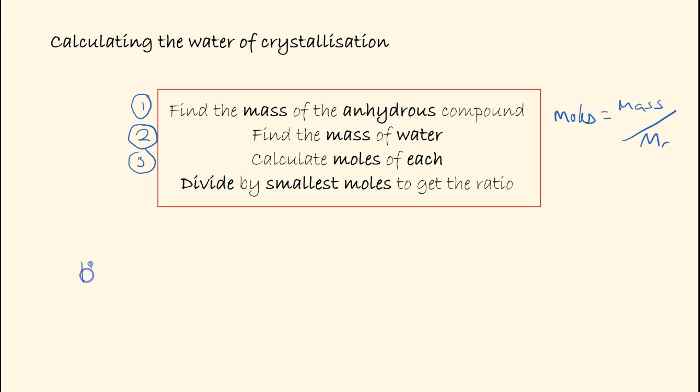For water, that's always 18, and the other ionic substance depends on what it is. We find the moles of the water and the moles of the ionic substance, then divide by the smallest number to get the ratio of water to the ionic crystal. We'll have a look at an example in just a moment.